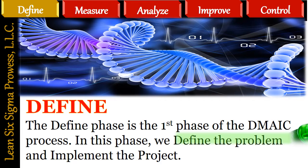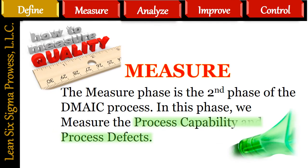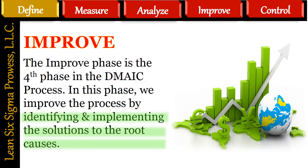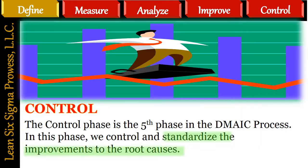Define is the first step of the DMAIC process. In this phase, we define the problem and implement the project. Measure is the second step, where we measure the process capability and process defects at the Gemba. Analyze is the third step, where we analyze the process data to identify the root causes, also called Xs, and their impact on the output, Y. Improve is the fourth step, where we improve the process by identifying and implementing solutions to the root causes. Control is the fifth and last step, where we control and standardize the improvements to the root causes.